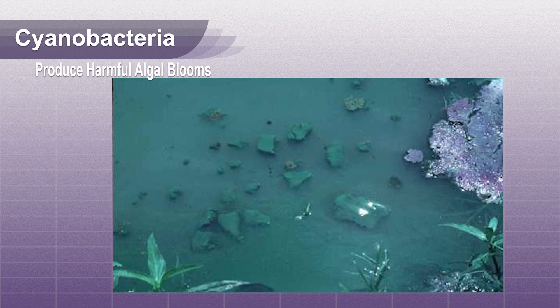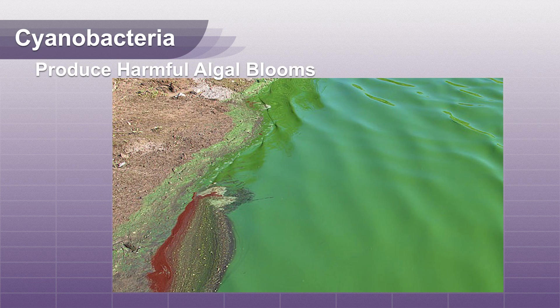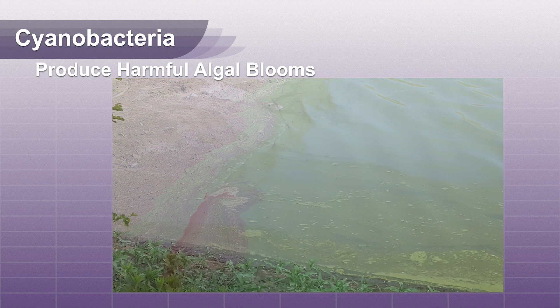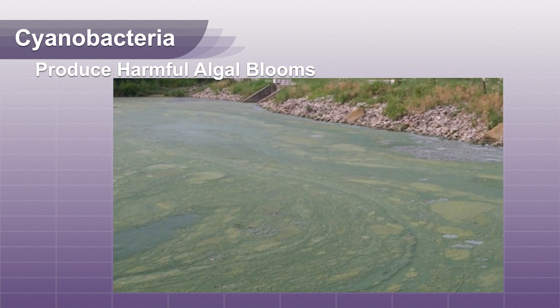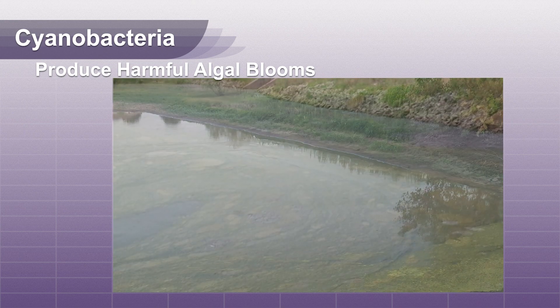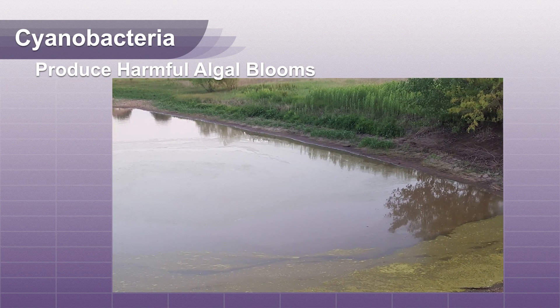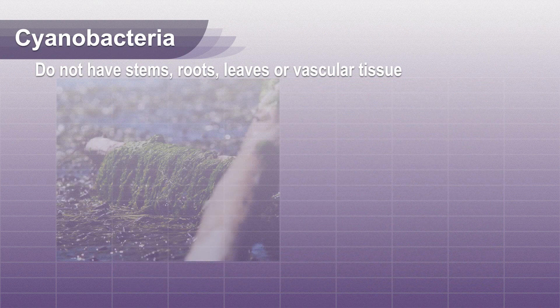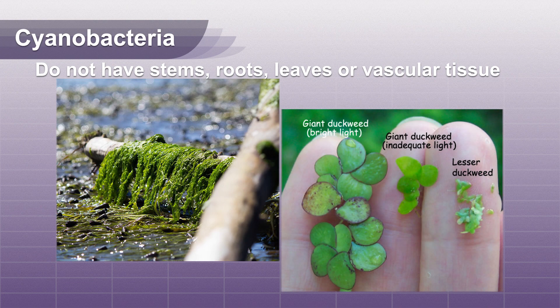Blue-green algae can be blue, bright green, brown, or red. It can look like scum, foam, or a mat on the surface of the water. It also may look like paint floating on the water. Do not confuse blue-green algae with plant growth like moss, duckweed, etc.